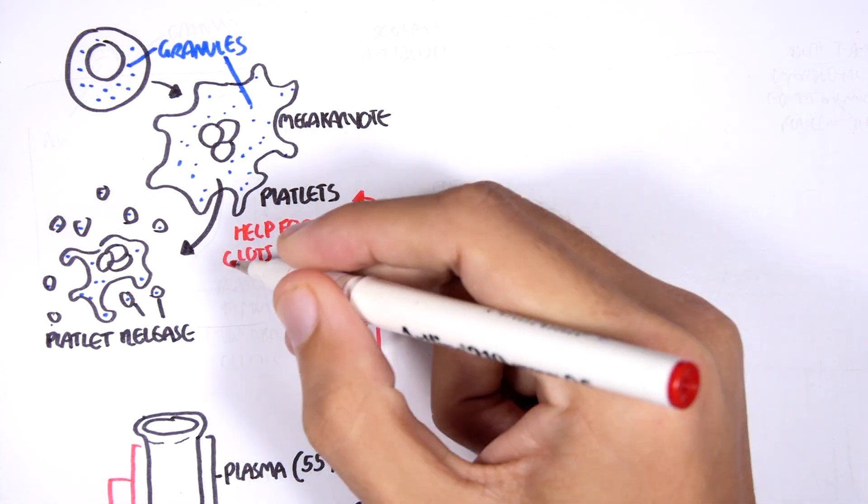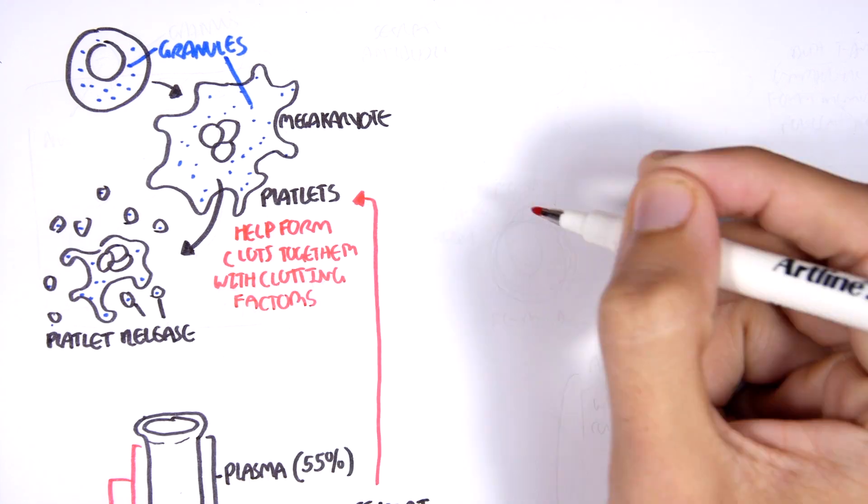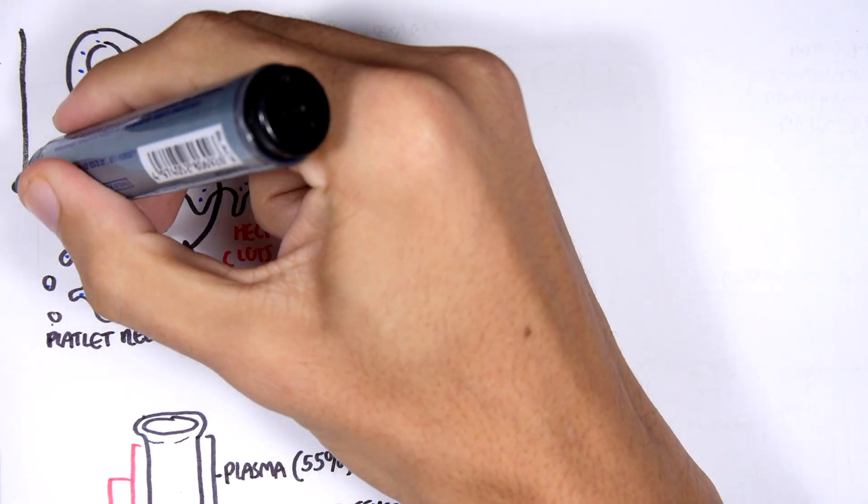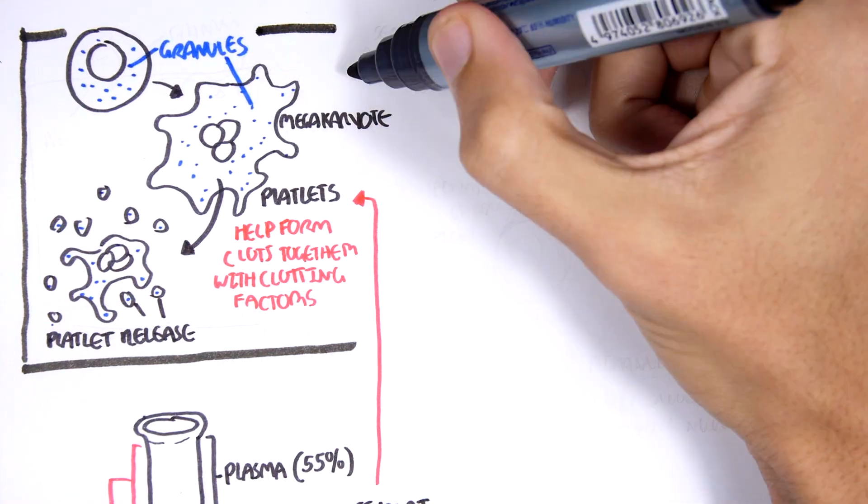And what platelets do is that, as I've mentioned, they help form clots together with the help of clotting factors that are found in the plasma.